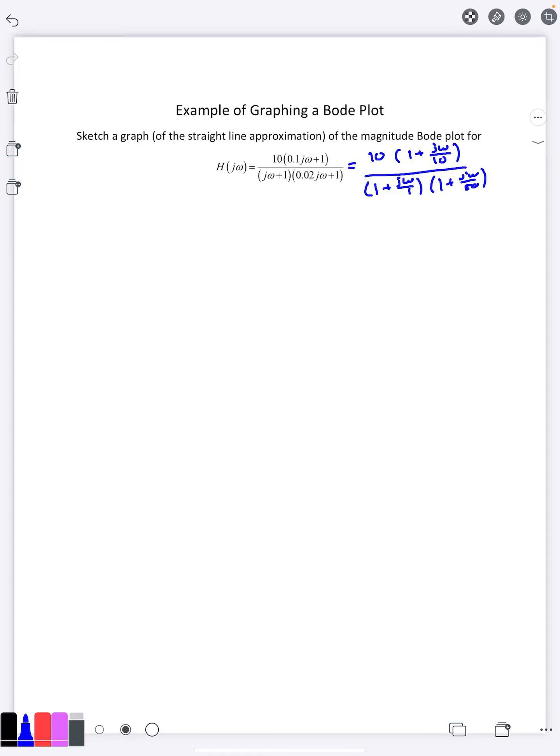Now what this is telling us is since we're in the standard format of 1 plus j omega over a number, these are going to be our break frequencies. So we have break frequencies on the numerator at 10 and the denominator 1 and 50.